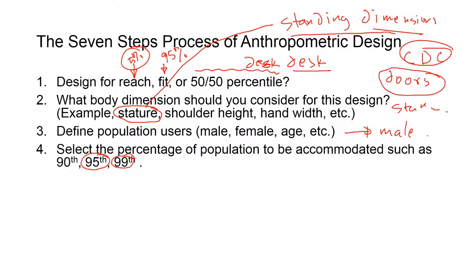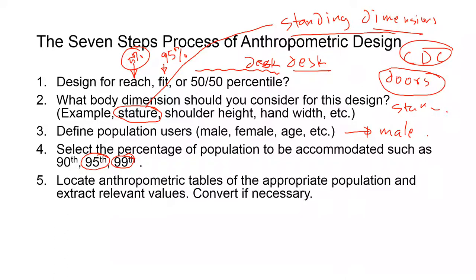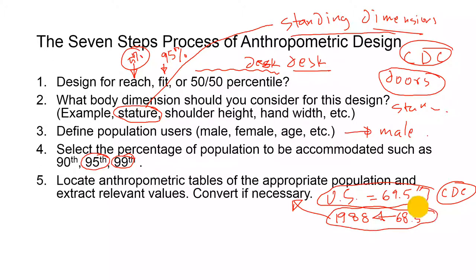You figure out which percentile to use, and then you check the anthropometric tables to find that appropriate value, stature height for height for example. US male stature height is 69.5 inches. Now you have to be careful with that anthropometric data. Most textbooks have data that was collected in 1988 from the US Army. This one is from the recent Center for Disease Control data. If you check, the older one has something like 68.5. So in these 30 years people have grown one inch.